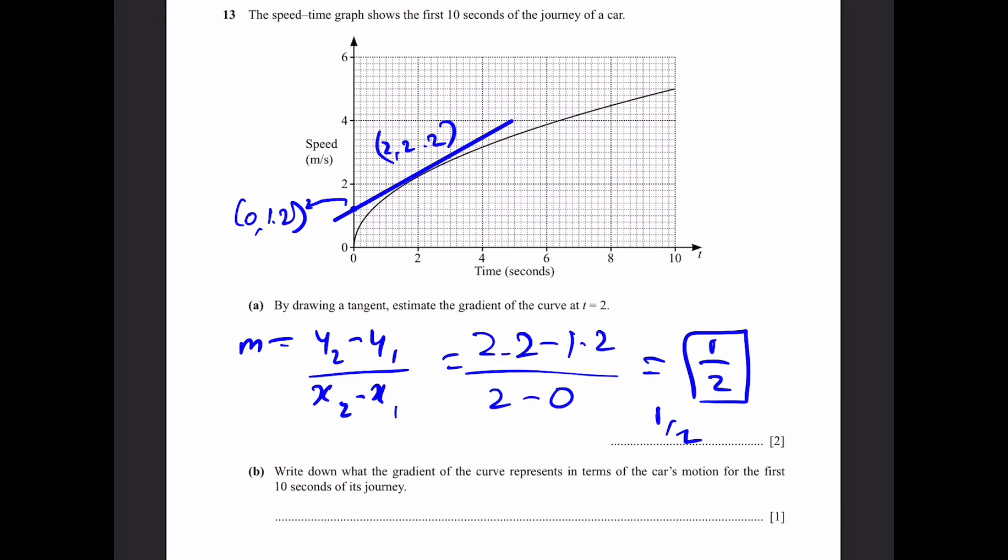Part B: Write down what the gradient of the curve represents in terms of the car's motion for the first 10 seconds of its journey. Well, this is a speed time graph and the gradient represents the derivative of the speed which is the acceleration, and the acceleration of the car. That's the answer.